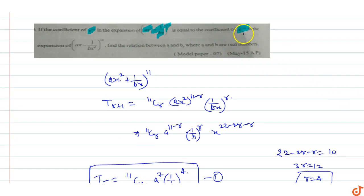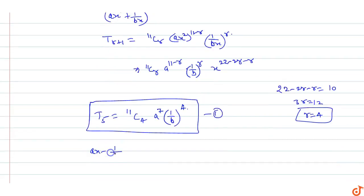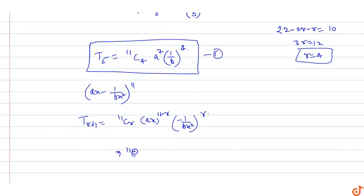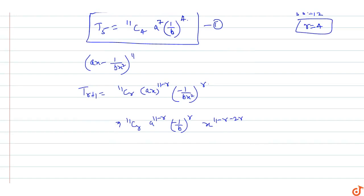Equation second मिलेगी coefficient of x^(-10) in the expansion of (ax - 1/bx²)^11 से। T(r+1) term होगी: 11Cr · (ax)^(11-r) · (-1/bx²)^r, which equals 11Cr · a^(11-r) · (-1/b)^r · x^(11-r-2r).